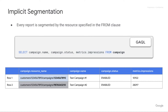Otherwise, if we selected campaign.name, status, and impressions without filtering, we would get one row that wouldn't be very useful. Instead, we get one row for every campaign that's in our account. As you can see here, we have the resource name, which is returned by default — you don't actually have to request that in your SELECT clause. You get the campaign.name, status, and our metrics as rows. Pretty straightforward.